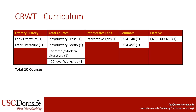Majors will also take an interpretive lens course. Creative Writing majors will also take two seminars, once in sophomore year and another in senior year. Finally, there is an additional upper division 300 or 400 level major elective for students to choose.